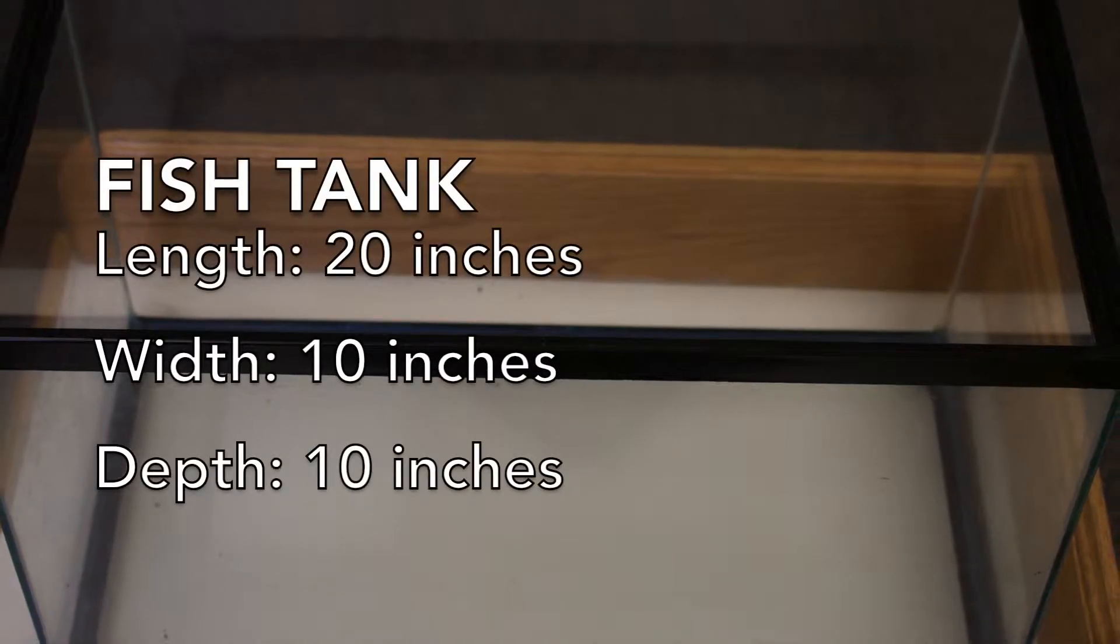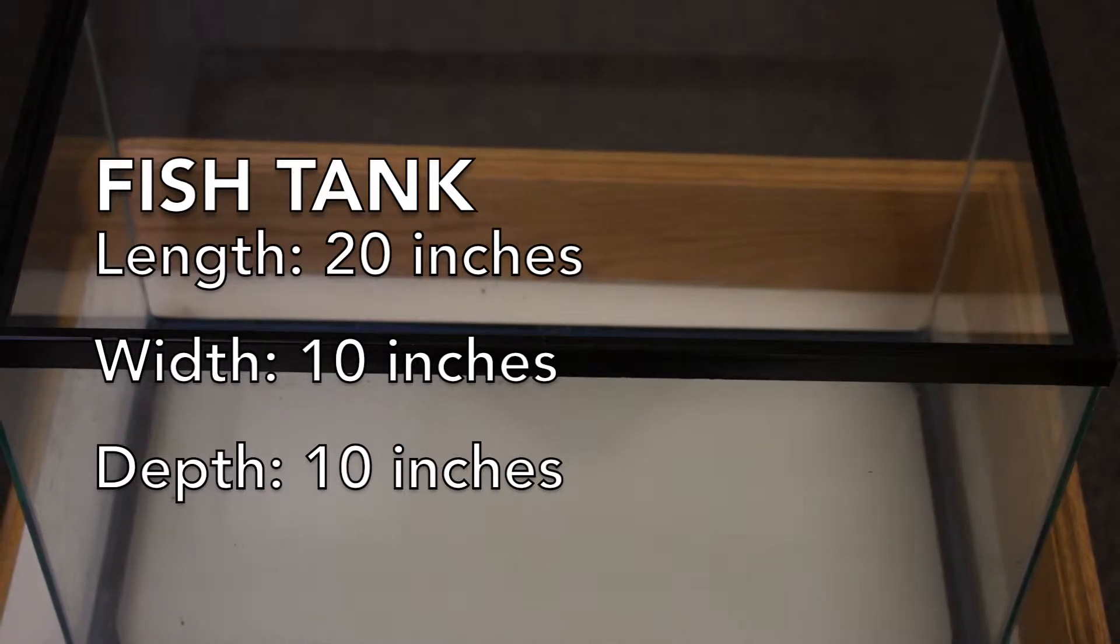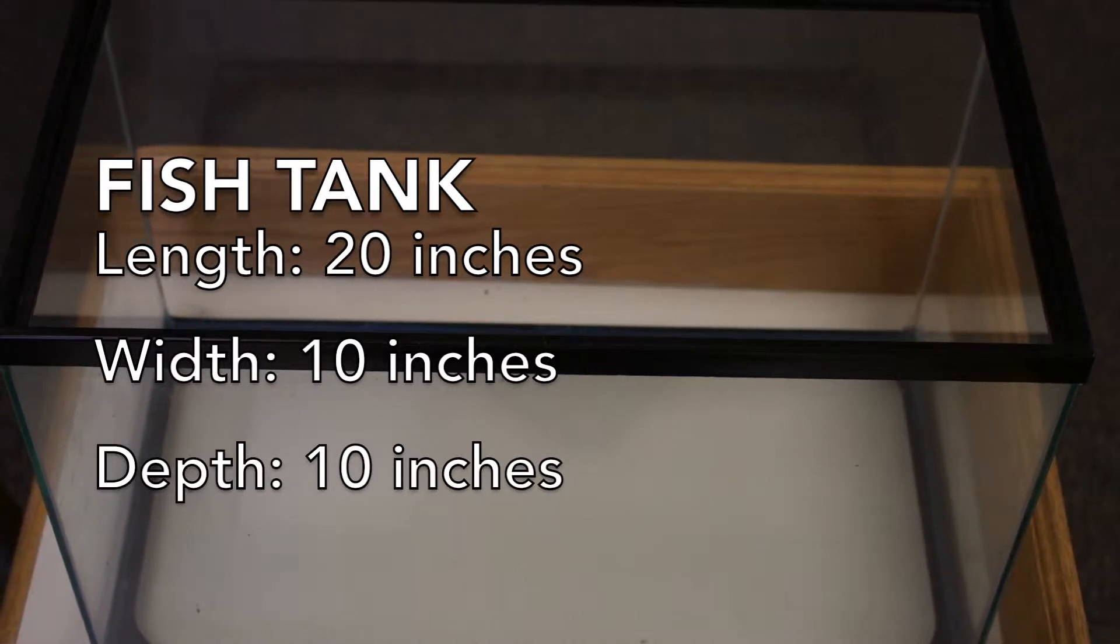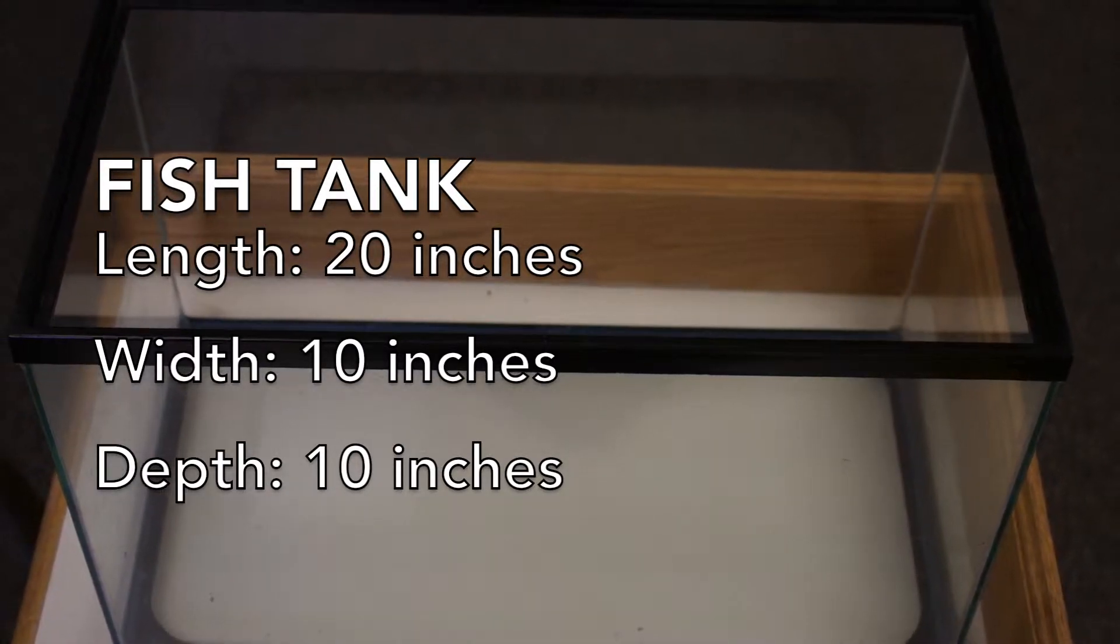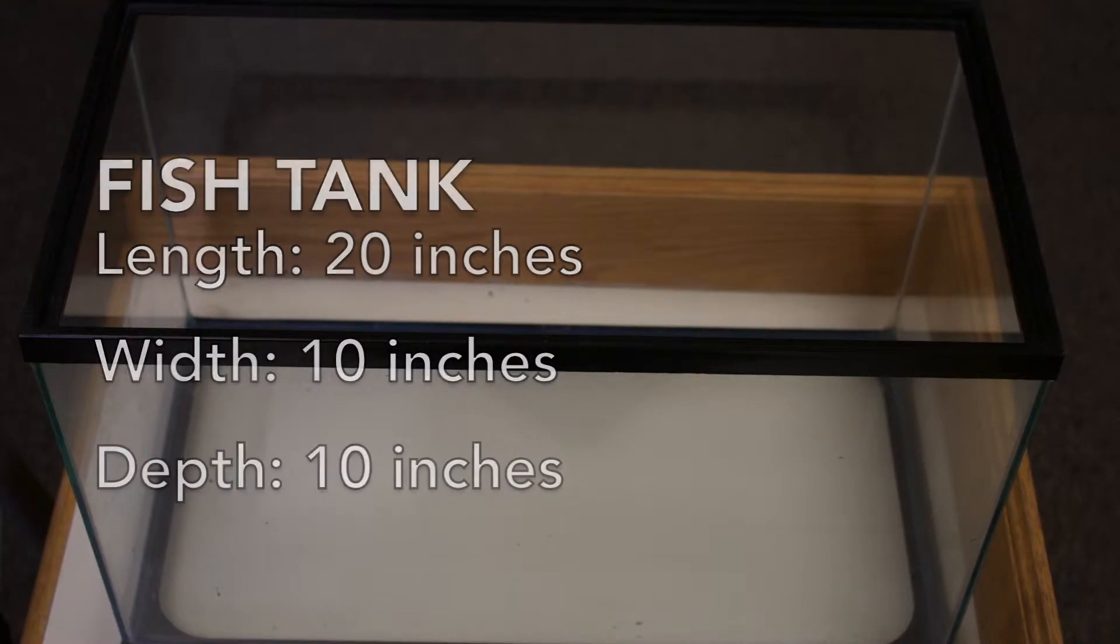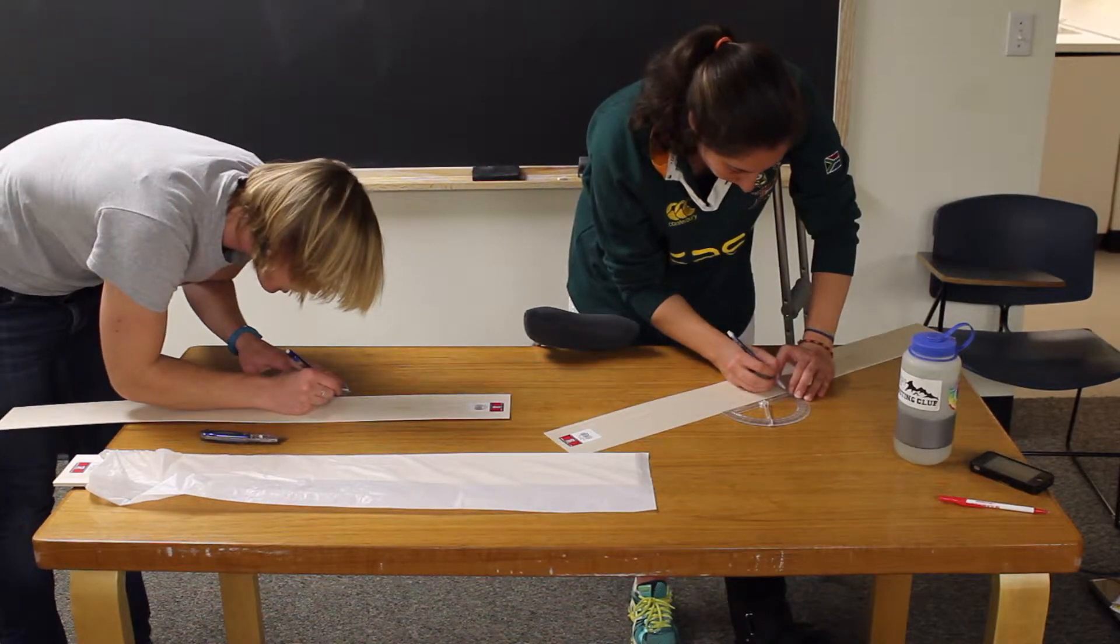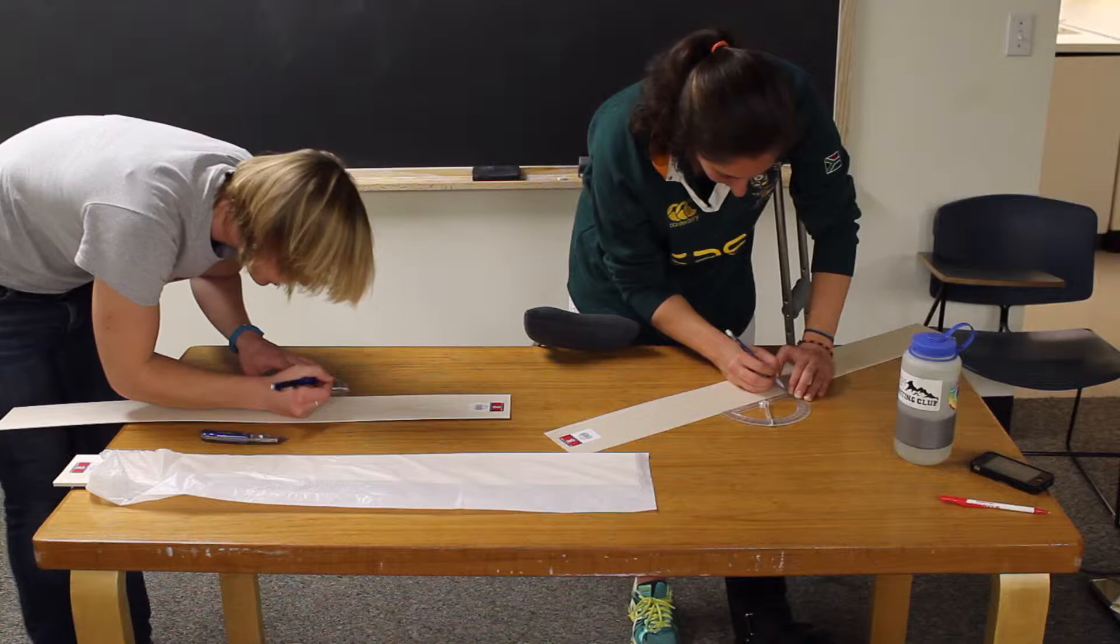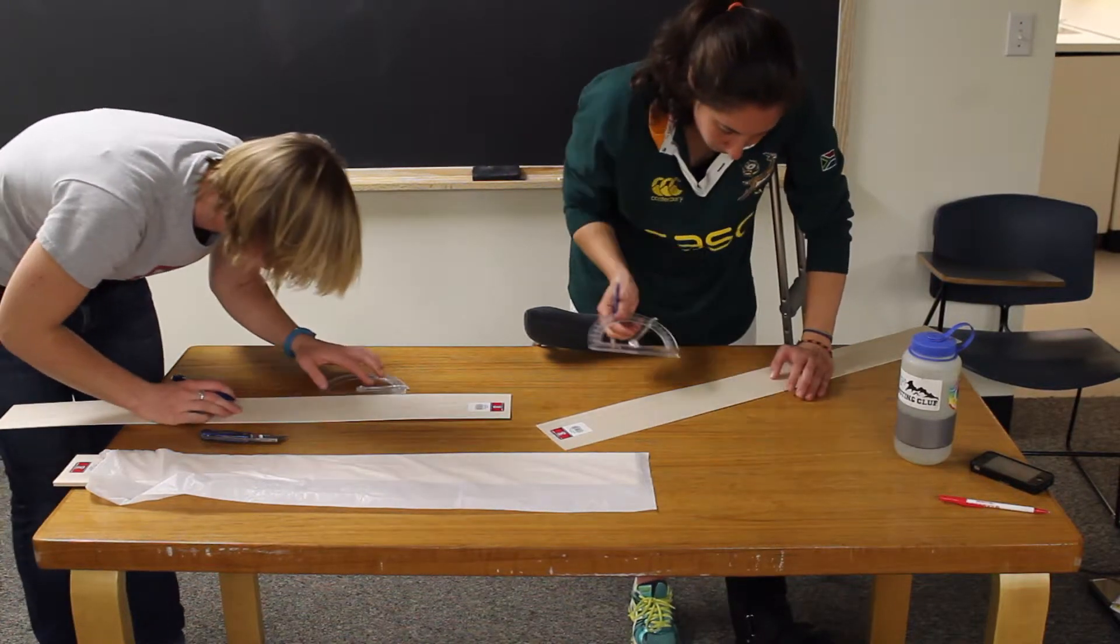The fish tank in which we were testing our boats had a width of 10 inches, a length of 20 inches, and a depth of 10 inches. We wanted to make our boats as big as possible within these constraints. Since we wanted our ships to have at least a 2 to 1 length to width ratio, the width of our knarr was the limiting factor.